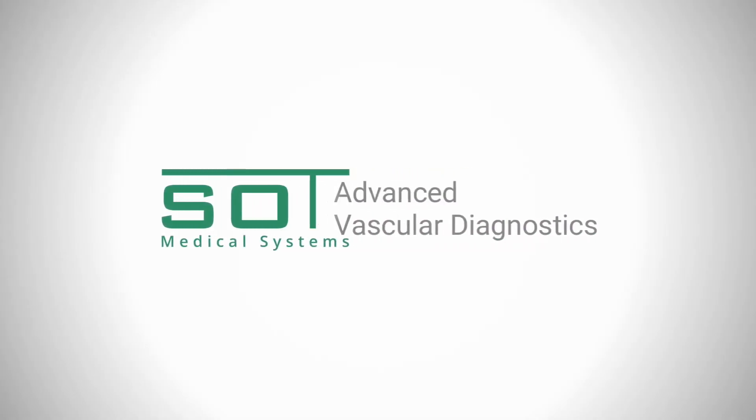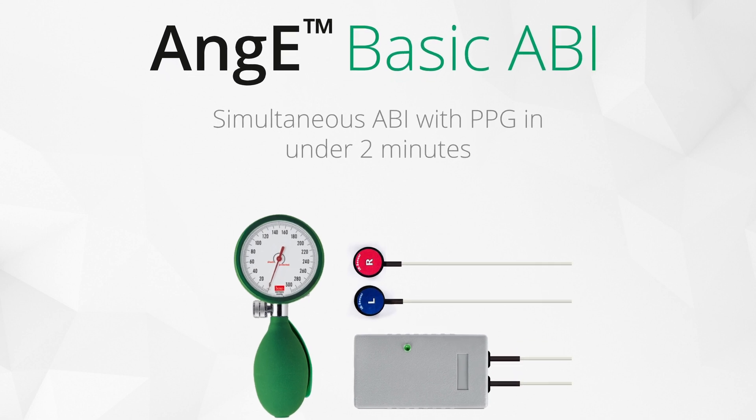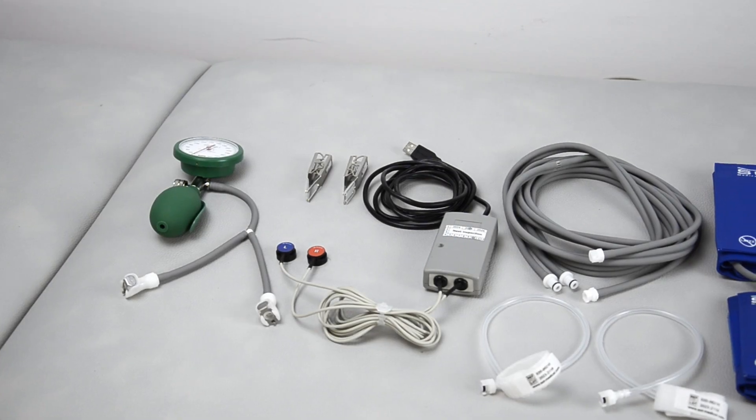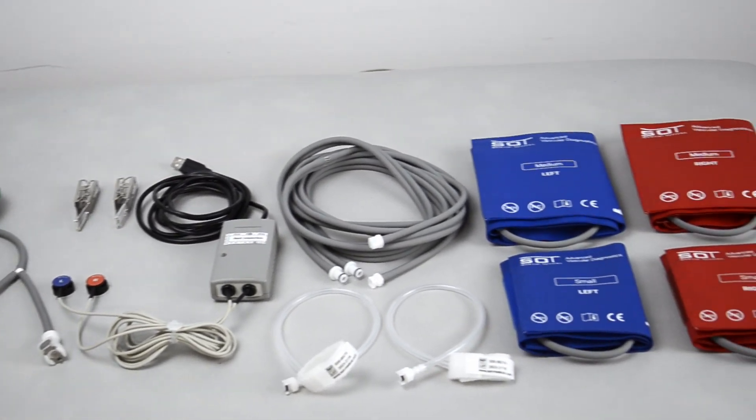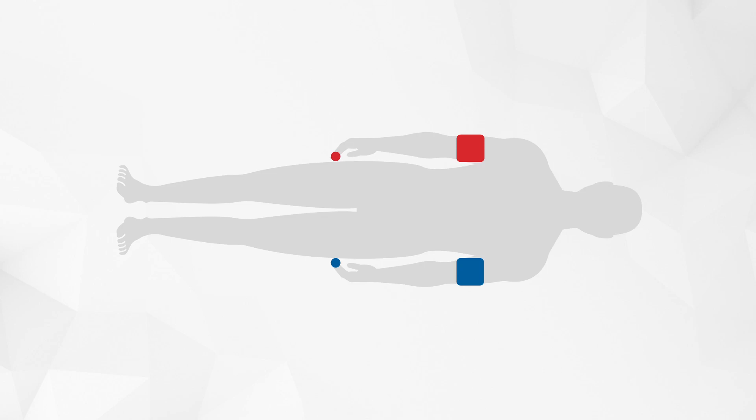The ANG BASIC ABI is an easy-to-use system for measuring ABI, TBI and pulse waves. It works with optical PPG sensors and blood pressure cuffs that are operated with a hand pump. This allows for a simultaneous measurement of the left and right side of the body at the same time for the most precise comparison.